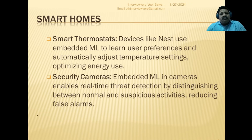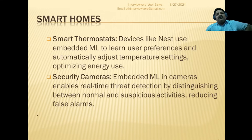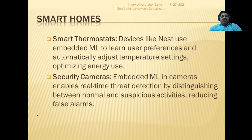Then you have smart homes. In smart homes, you have smart thermostats. Devices like Nest use embedded ML so that user preferences are automatically updated. For example, on a sunny day you want the temperature of your coffee to be lower, while on a colder day you want it higher. These kinds of features can be implemented using thermostats.